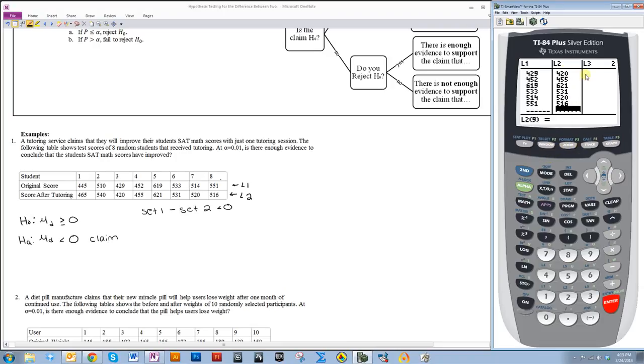Once you get all the values in, then you want to go over to L3 and highlight the column header, and you're going to make this say L1 minus L2. You get L1 by doing second and then the number one, because notice above the number one is in the blue L1, then minus L2. Now this column has calculated the difference between each value for you.